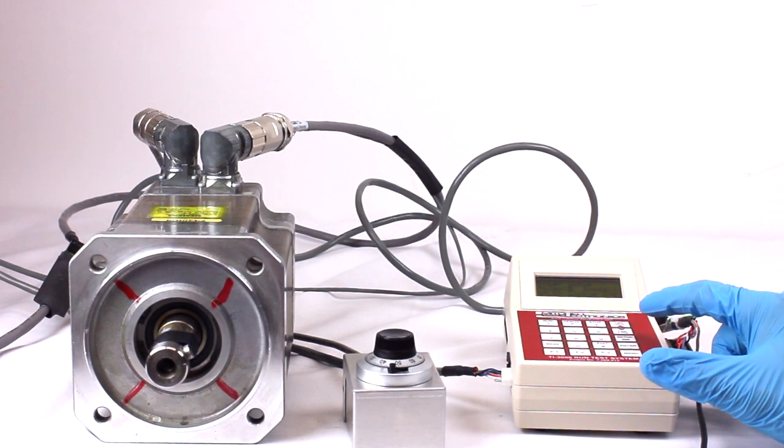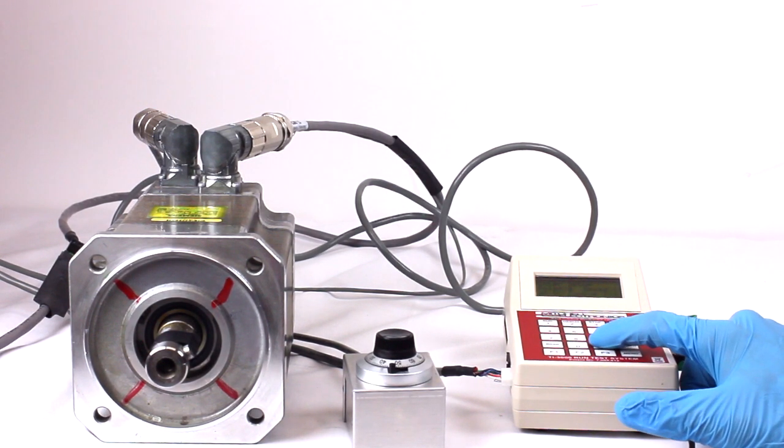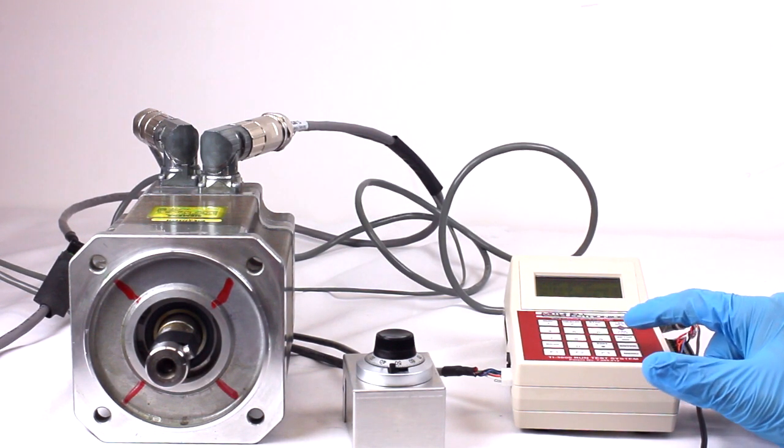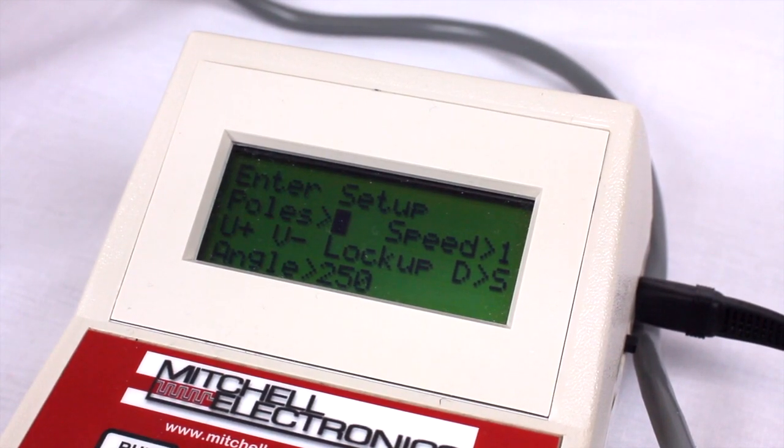Press the Setup key to enter the motor and feedback parameters. Change the parameters to match the setup of your motor. This Siemens motor has 8 poles.